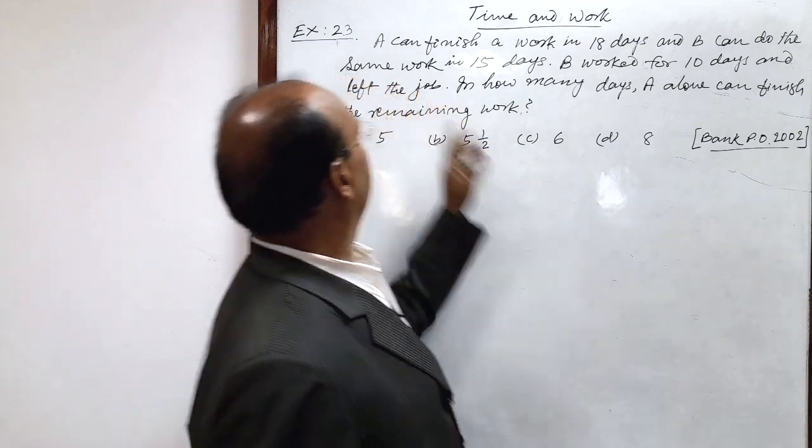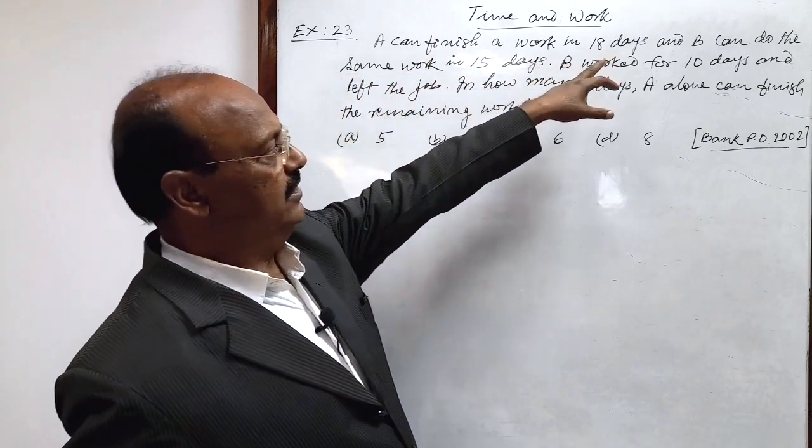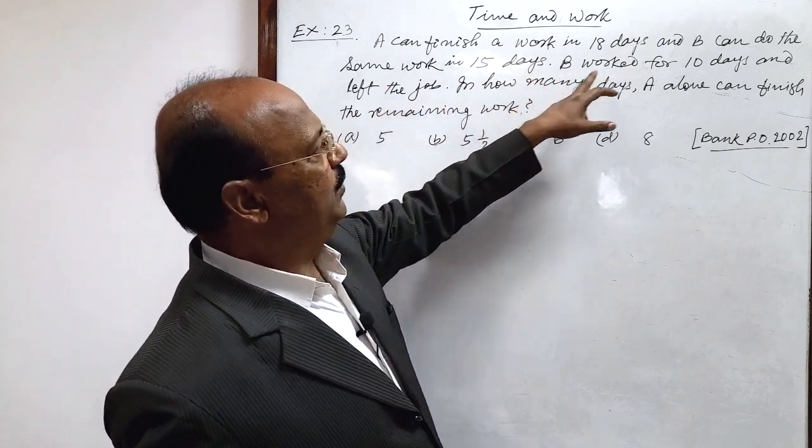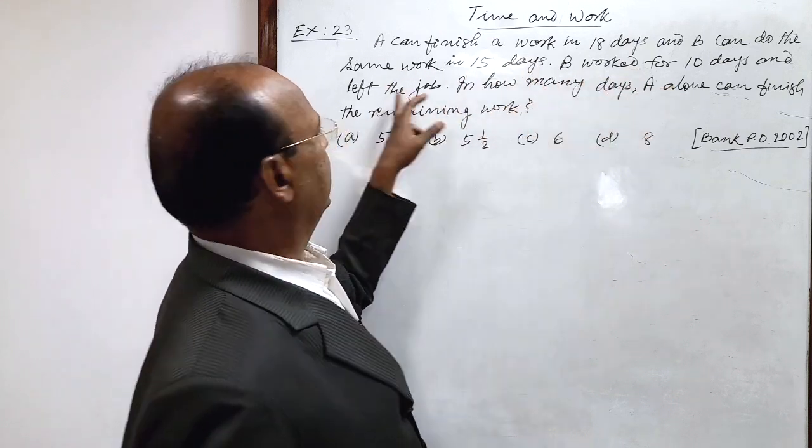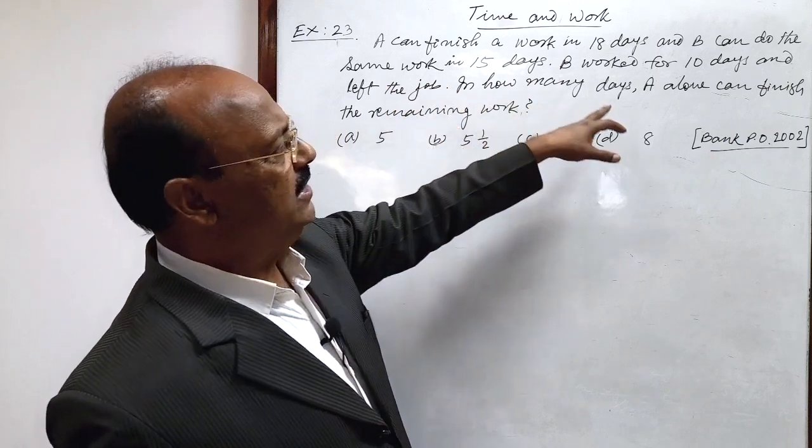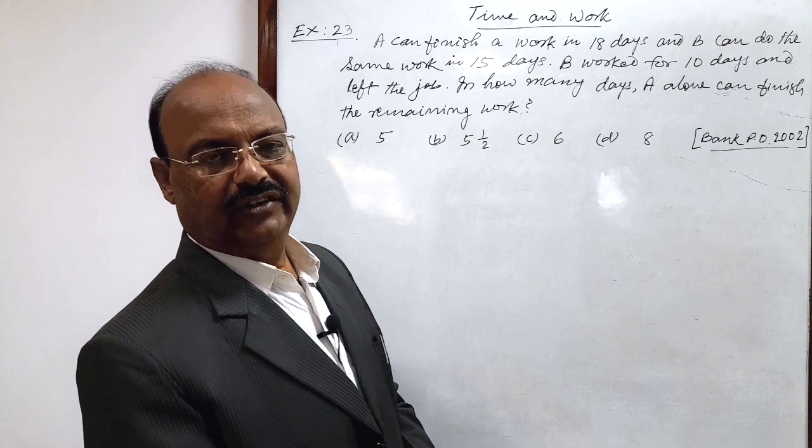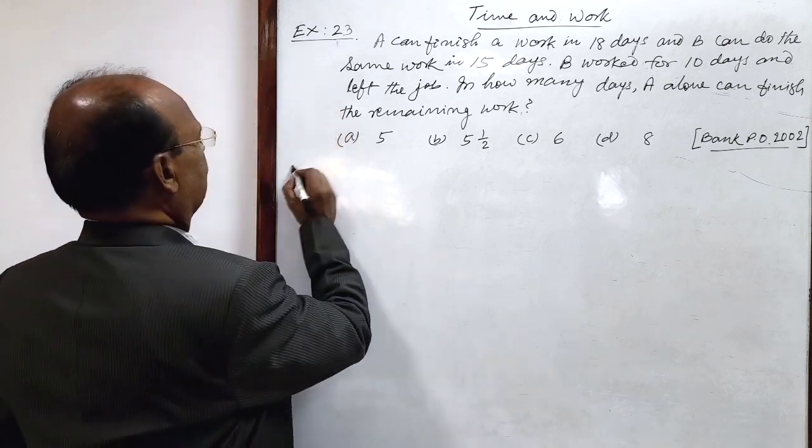Question is: A can finish a work in 18 days and B can do the same work in 15 days. B worked for 10 days and left the job. In how many days can A alone finish the remaining work? Let us see the solution here.